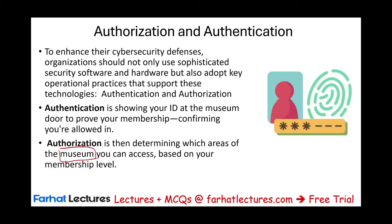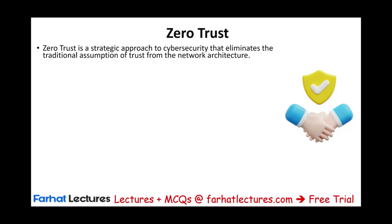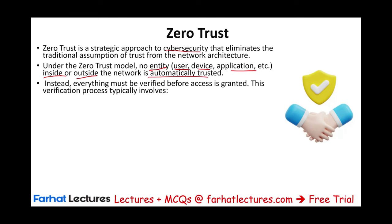Authorization versus authentication. The first thing we are going to implement is something called zero trust. Zero trust is a strategic approach to cyber security that eliminates the traditional assumption of trust from a network infrastructure. Under the zero trust policy, no one is trusted. Everyone will have to verify and re-verify themselves, proving that they are authorized to do what they're supposed to do. No entity — user, device, application — inside or outside the network is automatically trusted. Everything must be verified before access is granted.